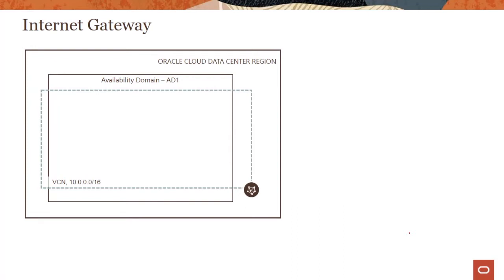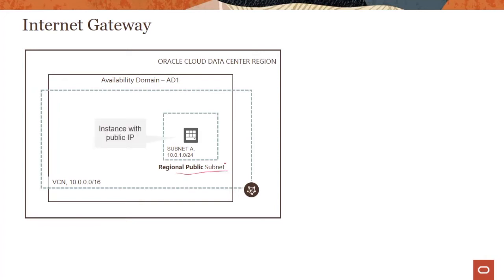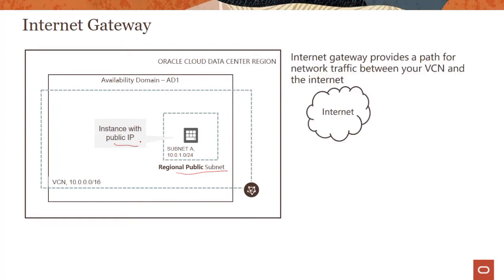The first gateway is called the internet gateway. As the name specifies, it's a gateway that takes traffic in and out from a public subnet. As you can see here, we have a public subnet — regional or AD-specific — and there's an instance which has a public IP. It can be a web server or a load balancer, use cases where you need users to be able to access it.